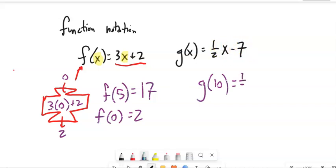if I plug in 10, it's 1 half times input is 10 minus 7. So, 5 minus 7 is negative 2. Again, this statement is saying, I took the number 10, I plugged it into the machine called g, and it spit out a negative 2.